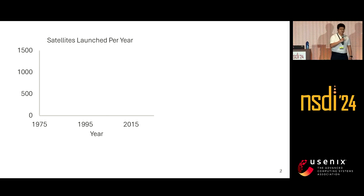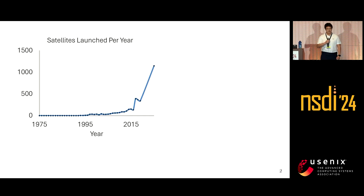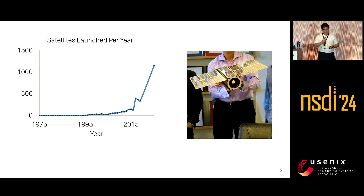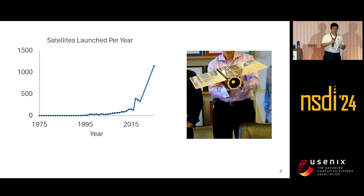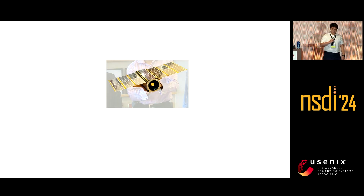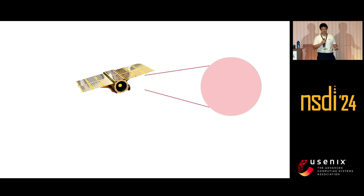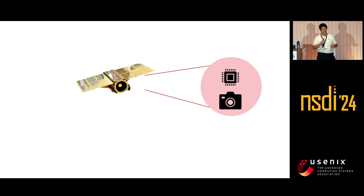If you look at the number of satellites launched per year, you can see an exponential growth recently. The reason is that some of these newly launched satellites are small cubesats that can fit in your hand. They are smaller, easier, and cheaper to launch, and companies are launching them in huge constellations. These satellites can contain all sorts of hardware on board, including photography hardware or computation hardware, giving them a lot of interesting applications.